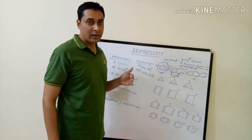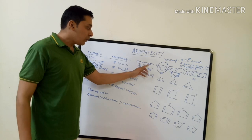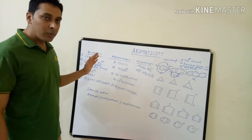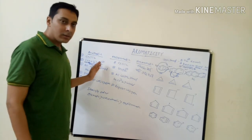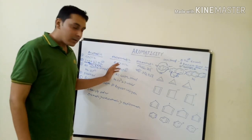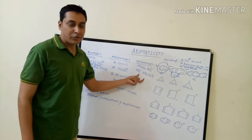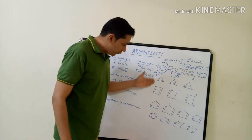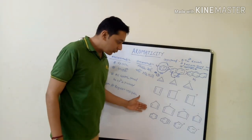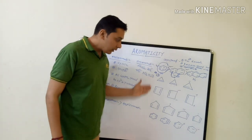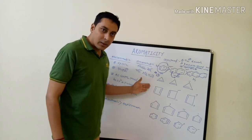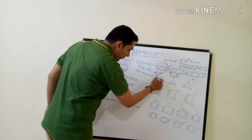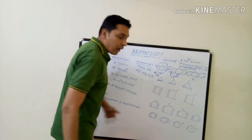Now we study aromatic, anti-aromatic, and non-aromatic examples one by one. A non-aromatic compound is one that does not show aromatic or anti-aromatic character. We will examine three-membered, four-membered, five-membered, and six-membered cyclic compounds to determine their character. For the first example — a three-membered compound containing one double bond — one double bond equals two pi electrons.